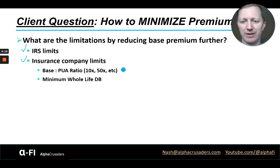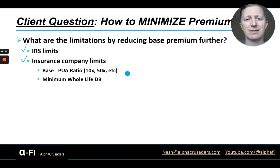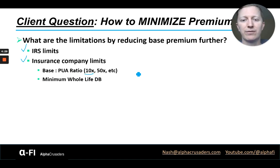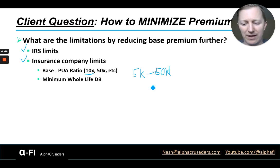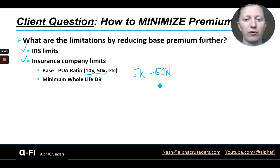Those are the IRS limits. The reason that's important to the base premium is that the base premium is buying you whole life death benefit, and your death benefit has a direct correlation to the MEC limit. The second limitation is the insurance company limits. Beyond the IRS, insurance companies may have ratios of how much base premium to PUAs you can put in. For example, Mass Mutual has a 10x limitation — so if your base premium is $5,000, you can put up to a maximum of $50,000 total into the policy. Other companies like Guardian allow 50x in the first year, so with a $5,000 base premium you could actually put $250,000 into the policy in the first year.